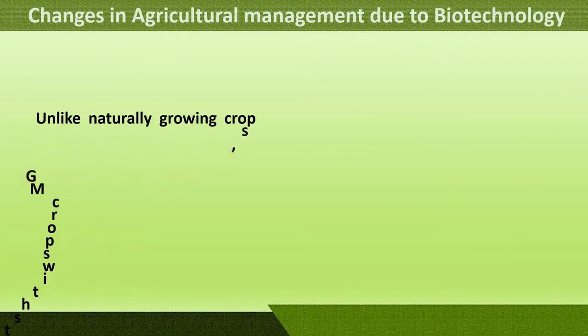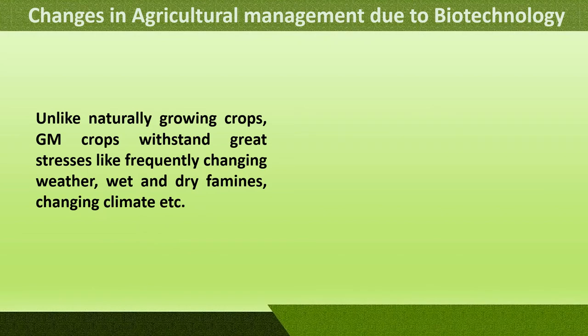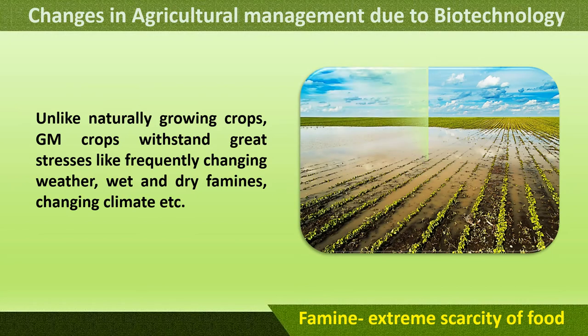Unlike naturally growing crops, GM crops can withstand great environmental stresses such as frequently changing weather — hot, cold, rainy, wet and dry — and even famines, which are conditions where there is absolutely no food due to floods, lack of rain, or changing climate. Normal crops will perish and die under these extreme environmental changes, but GM crops are able to withstand these stresses.